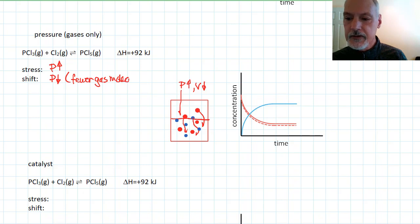The pressure going down would be accomplished by moving to the side with fewer gas molecules. Now, the reason we know that is Avogadro's law, that pressure is proportional to the number of moles of gas. So if I go to the side with fewer gas molecules, I'll get fewer pressure. So here I can see on this side there's two gas molecules, here one. So this particular stress, increasing the pressure or reducing the volume, will drive the reaction in the forward direction.